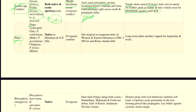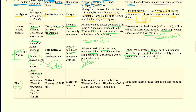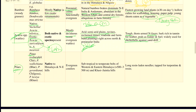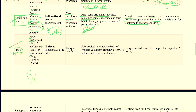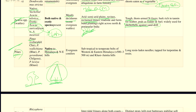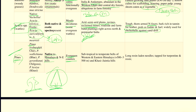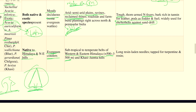Coming to Pines — Pinus roxburghii is a very common species found here. The trees discussed so far are not coniferous, but this is a coniferous tree. The difference is that broad-leaved trees have flat leaves, whereas coniferous trees have needle-like foliage. It is native to the Himalayas and Northwestern hills — an evergreen conifer. Its distribution is confined to the Western Himalayas within a specific elevation range. It has long resin needles from which turpentine and rosin are extracted.